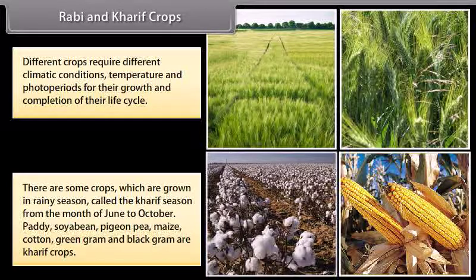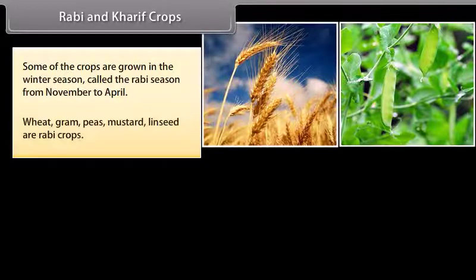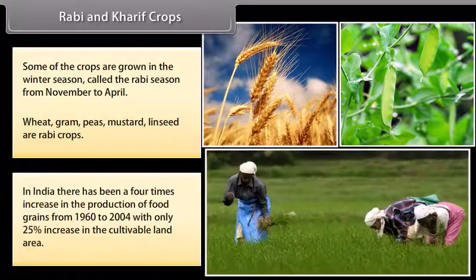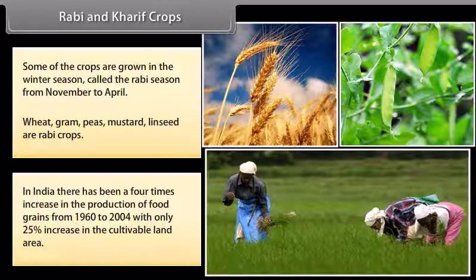Paddy, soybean, pigeon pea, maize, cotton, green gram and black gram are Kharif crops. Some crops are grown in the winter season called the Rabi season, from November to April. Wheat, gram, peas, mustard and linseed are Rabi crops. In India there has been a 4 times increase in the production of food grains from 1960 to 2004, with only 25% increase in the cultivable land area.